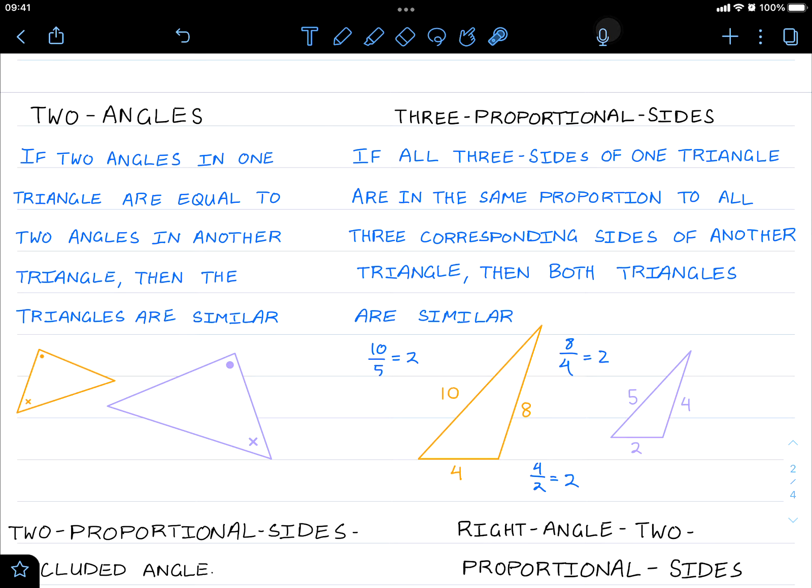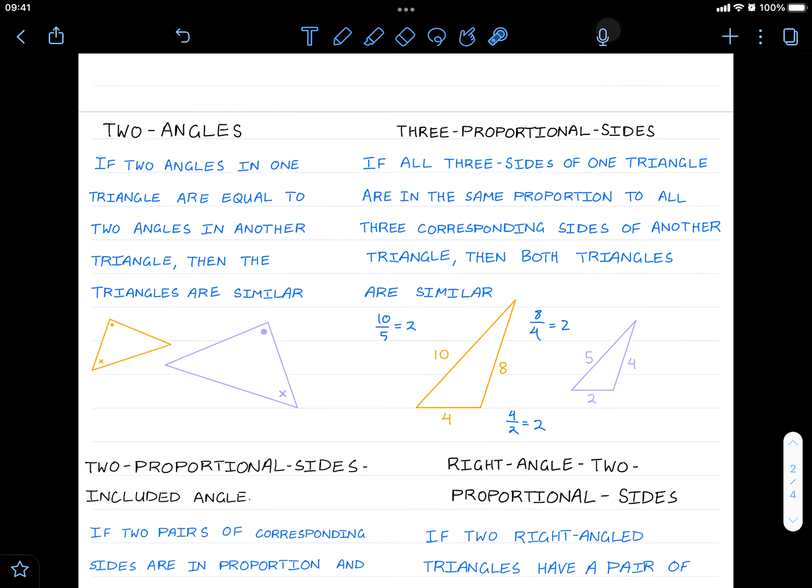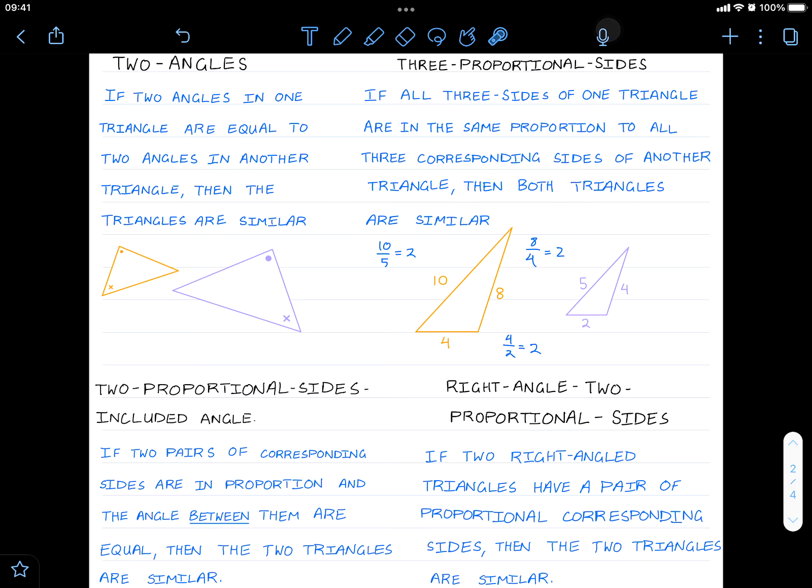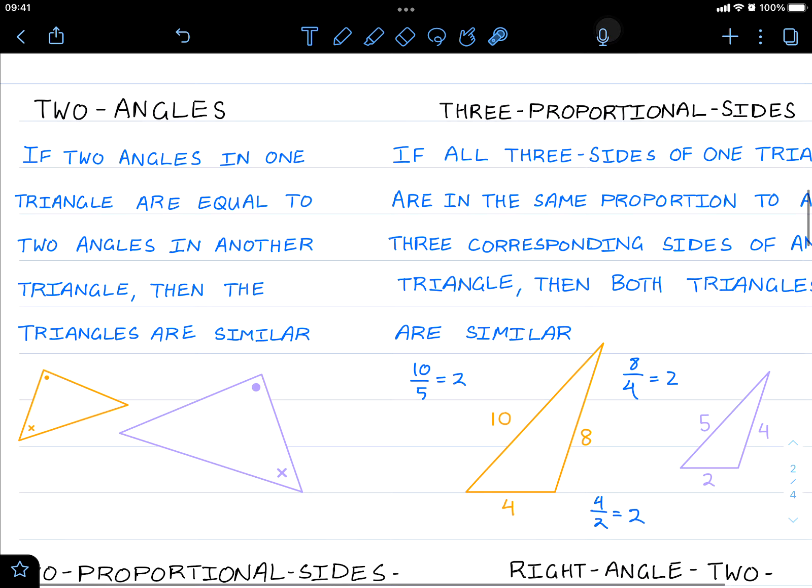Now don't be confused with these for congruency tests. They look like they are related to congruency tests, but they are not quite the same. These four tests shown here are for similarity. So if you have two triangles and you find two pairs of equal angles, then these two triangles are similar.